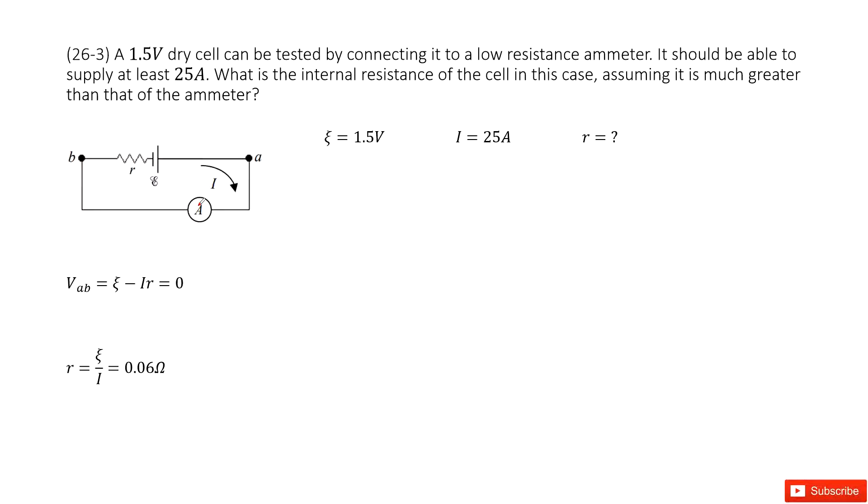So now we can see the current going through this circuit is 25 amps. Yeah, it's a super huge current, right? And then it asks you to find the internal resistance.